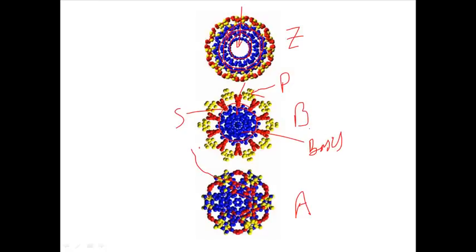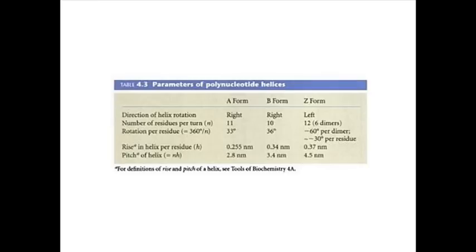These are the parameters of polynucleotide helices. In case of A-DNA it is right-handed, B-DNA is also right-handed, Z-DNA is left-handed. In B form, there are ten residues, A form eleven, and Z form twelve, which is actually made up with six dimers. That's another important part of it.